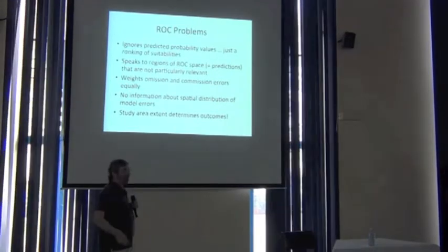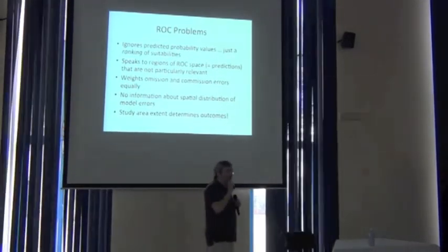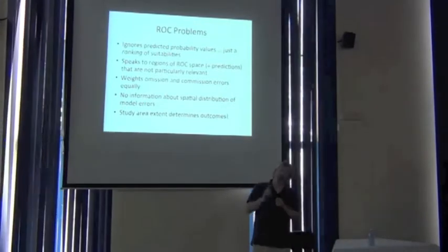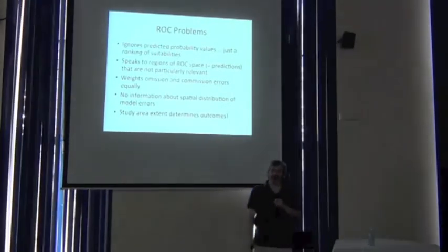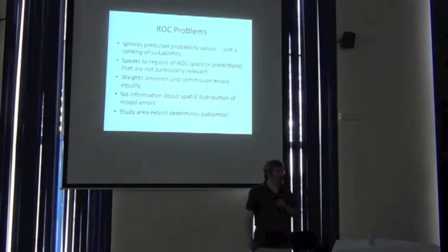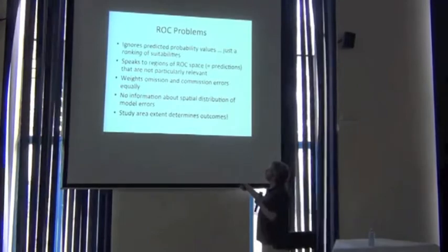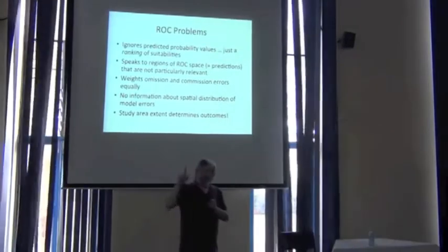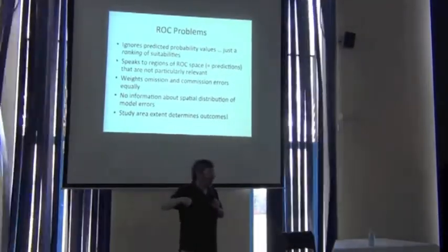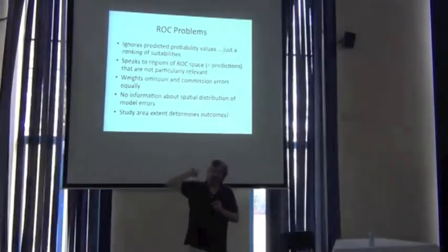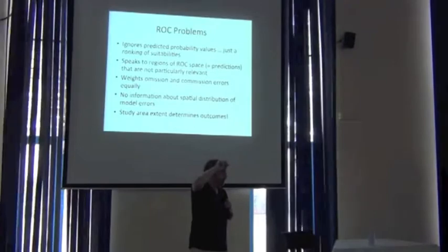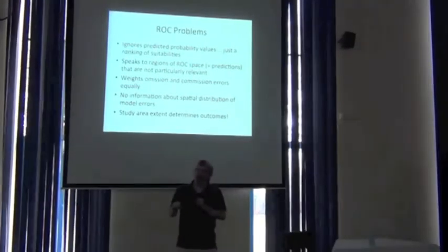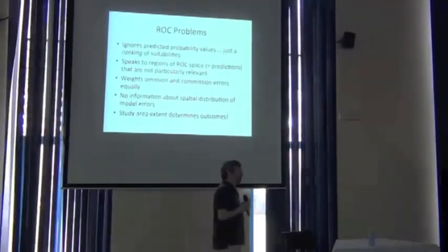It weights omission and commission errors equally. You guys should remember that omission error is based on presence data, and so we should be really concerned about it. Commission error is based on absence data which we don't have, it's made-up data. So we do not want anything that weights omission error and commission errors equally, which is to say, in the confusion matrix, A and B, which are both correct predictions, A is much more important than B because it's a correct prediction of presences. And same for incorrect prediction of presences versus incorrect prediction of absences, we need to weight omission error more.